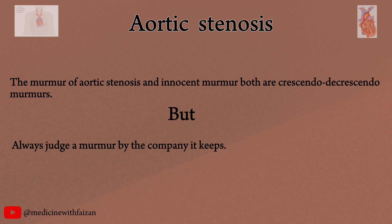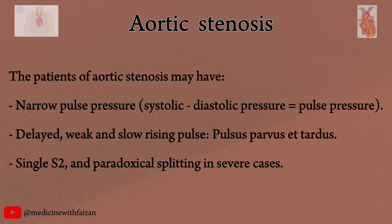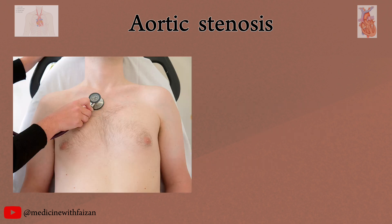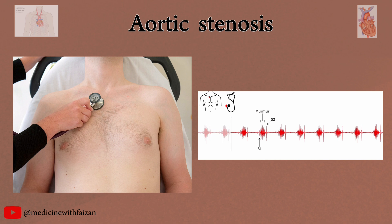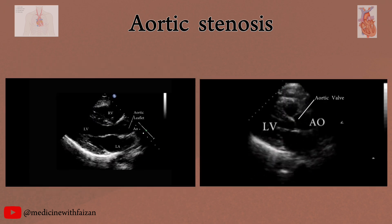The accompanying physical signs and clinical features in aortic stenosis will differ from those of other murmurs. Patients with aortic stenosis may have a narrow pulse pressure due to reduced stroke volume. The arterial pulse may be weak, delayed, and slow-rising, termed pulsus parvus et tardus. S2 will be soft and single, as LV systole is prolonged due to the stenotic aortic valve, so A2 occurs late alongside P2. As severity increases, A2 may occur after P2, causing paradoxical splitting of S2. Compare normal echocardiography with the echocardiography of a patient with aortic stenosis.